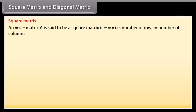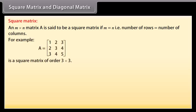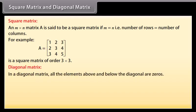Square matrix and diagonal matrix. Square matrix: an M by N matrix A is said to be a square matrix if M is equal to N, that is, the number of rows equals the number of columns. For example, A is a square matrix of order 3 by 3. Diagonal matrix: in a diagonal matrix, all the elements above and below the diagonal are zeros. For example, B is a diagonal matrix.